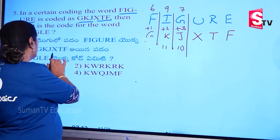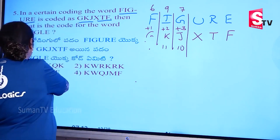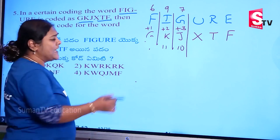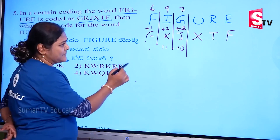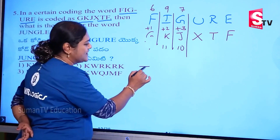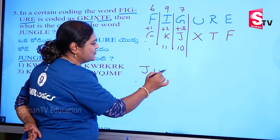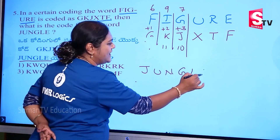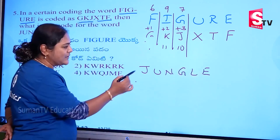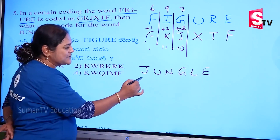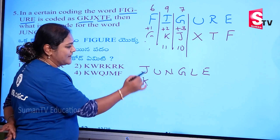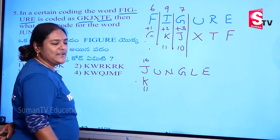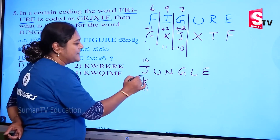So this word JUNGLE is coded. The letters are G, U, N, G, L, E — JUNGLE. 10 plus 1 equals 11. So the first letter gives us 11, which is K.